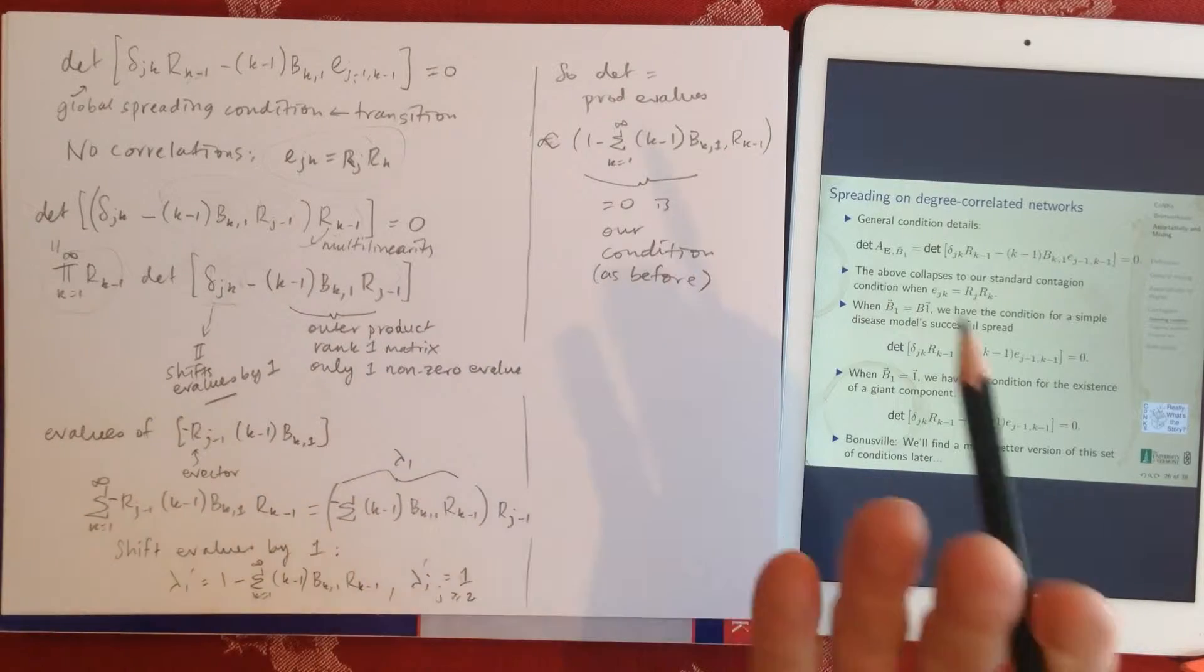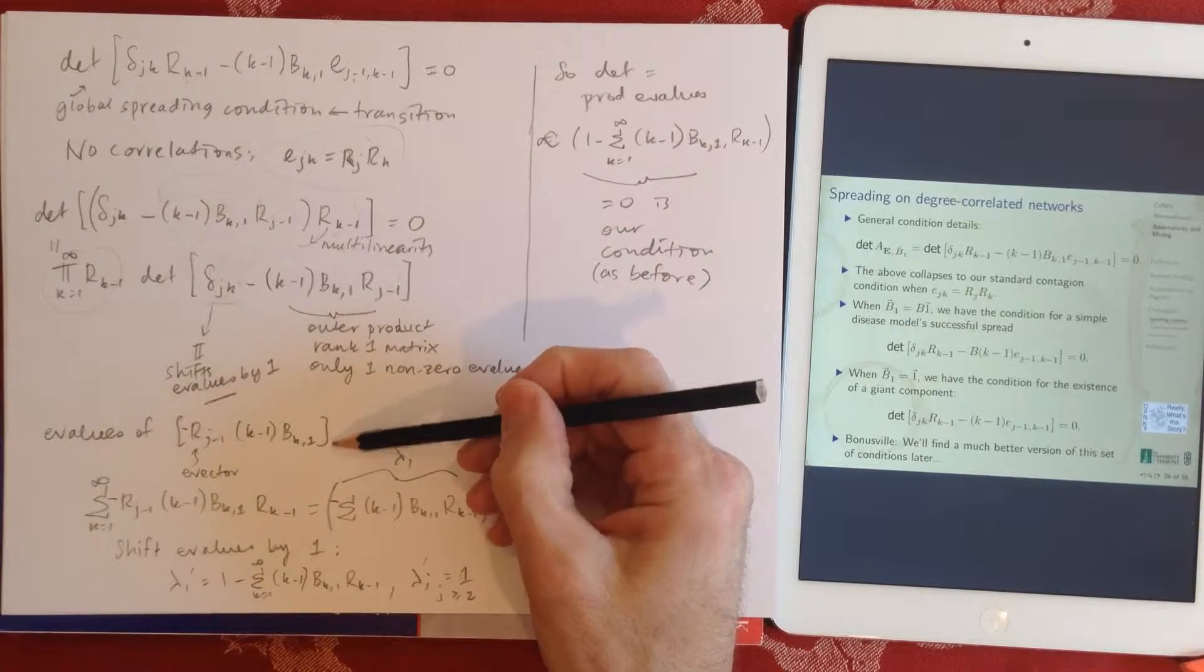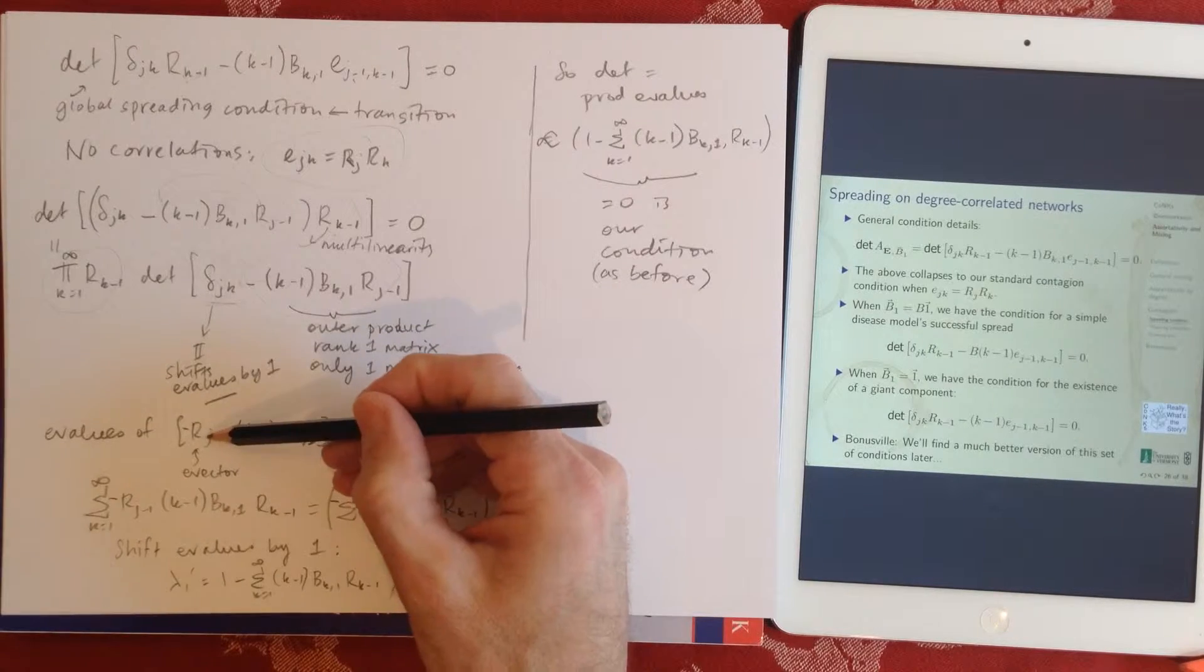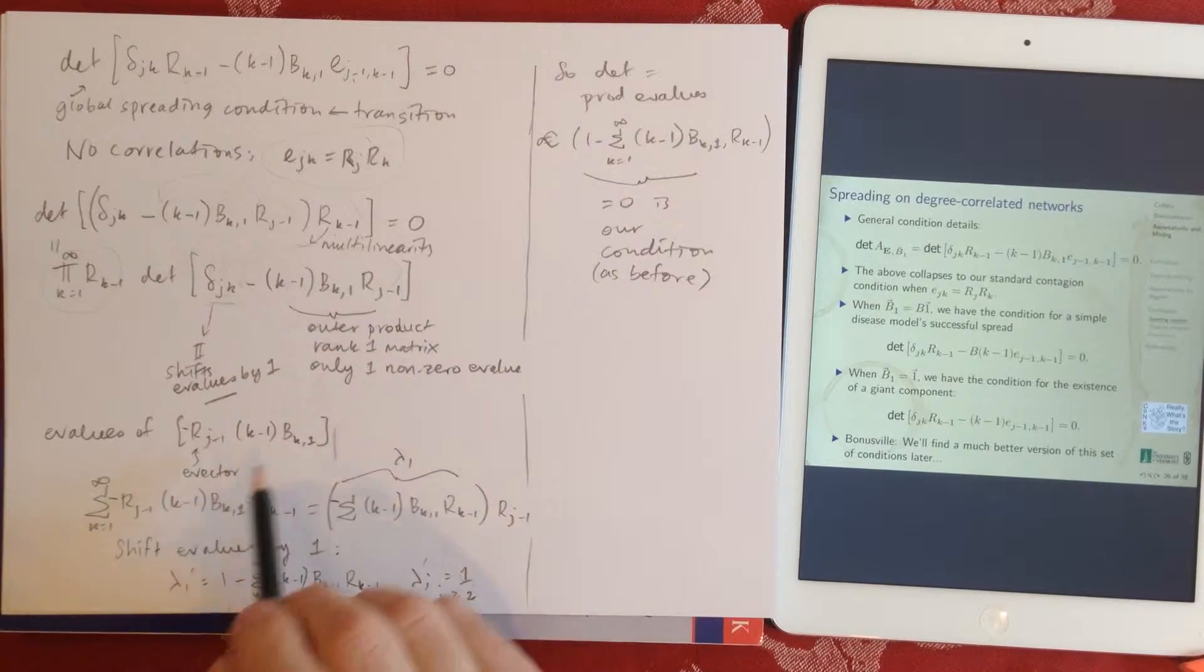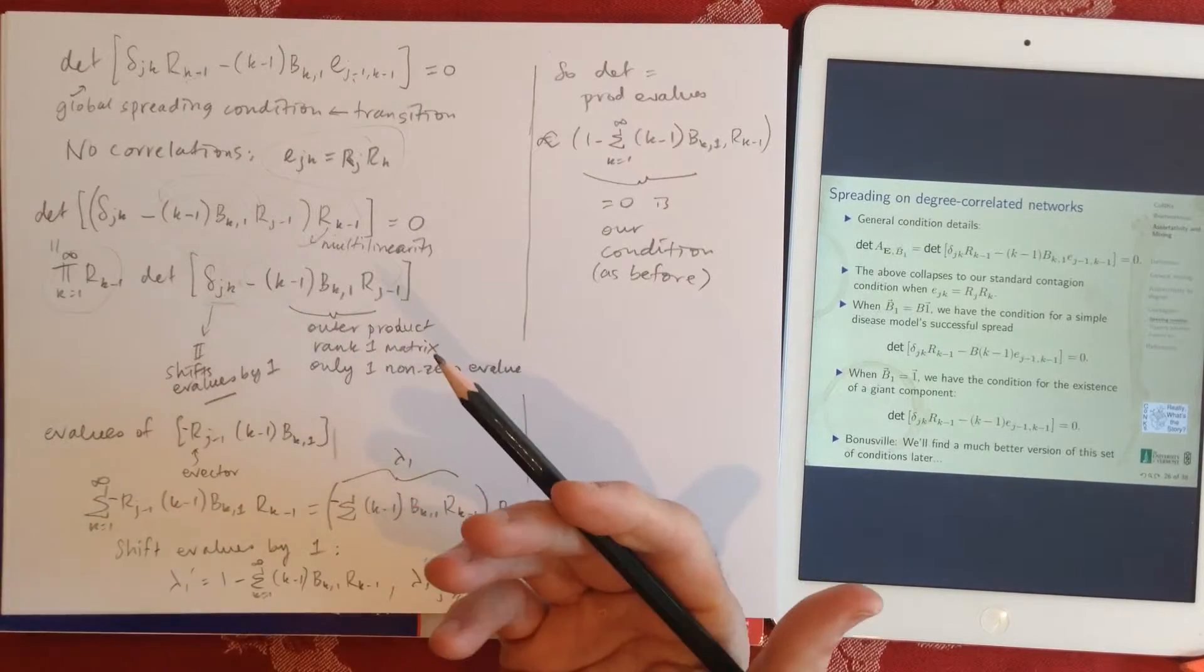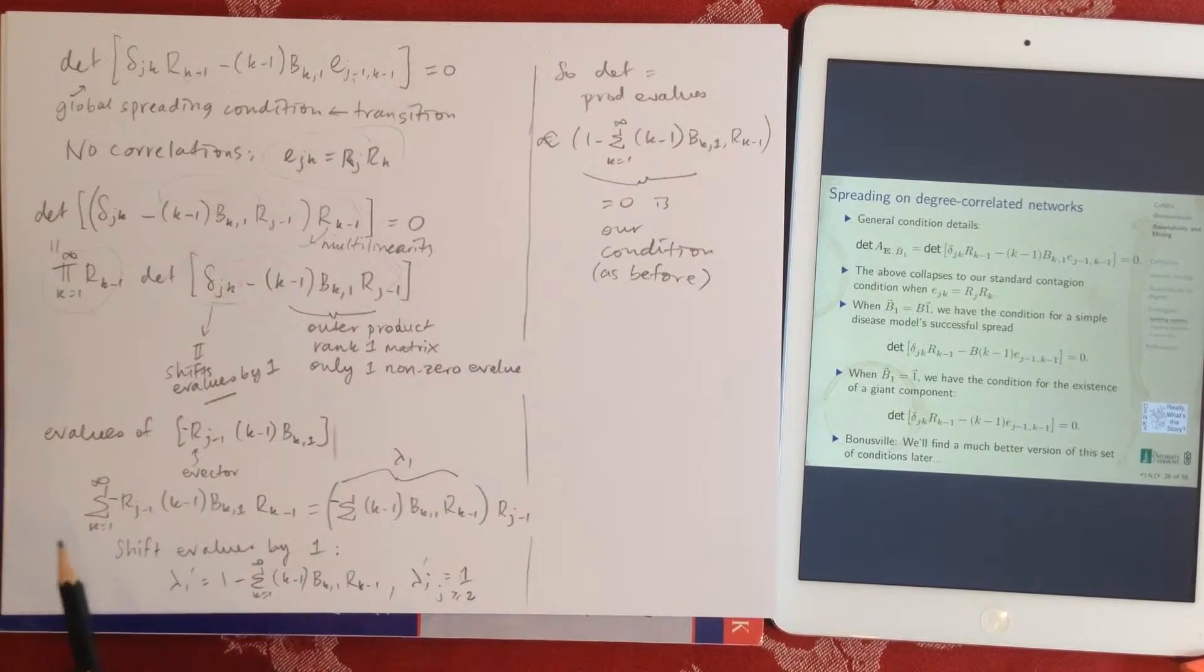And we can just find out the eigenvalue by multiplying it by rj, rk minus one, this guy, summing over the k's, and whatever's left over will be our eigenvalue. Whatever's in front of the resulting rj minus one. So we've got all this blob, we've put an rk minus one, we're summing from k plus one to infinity.